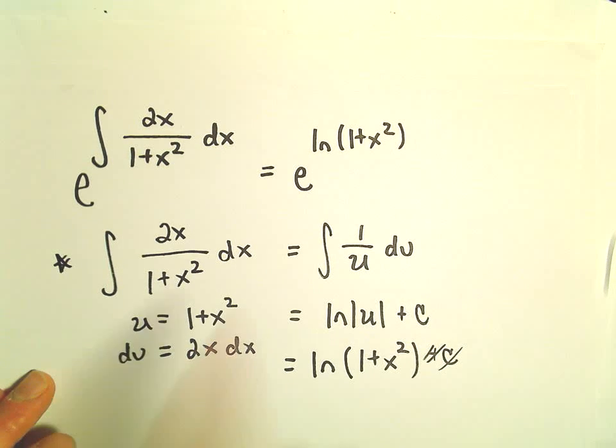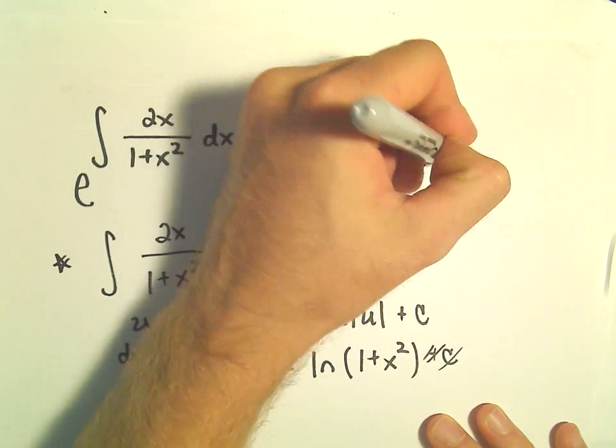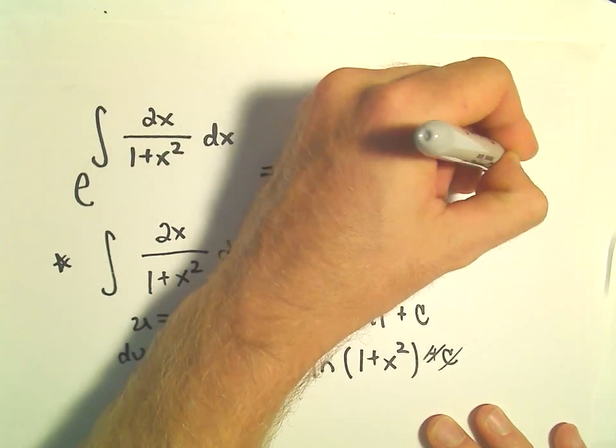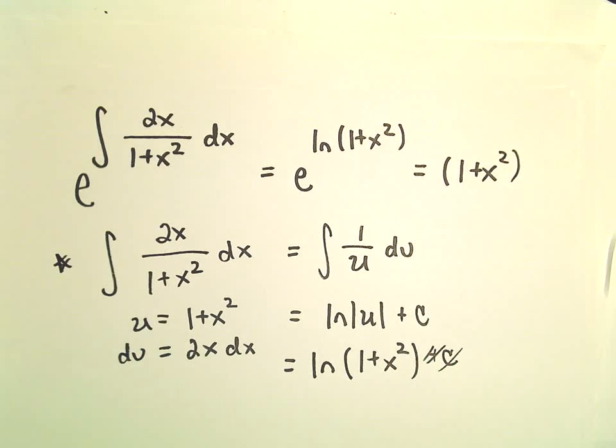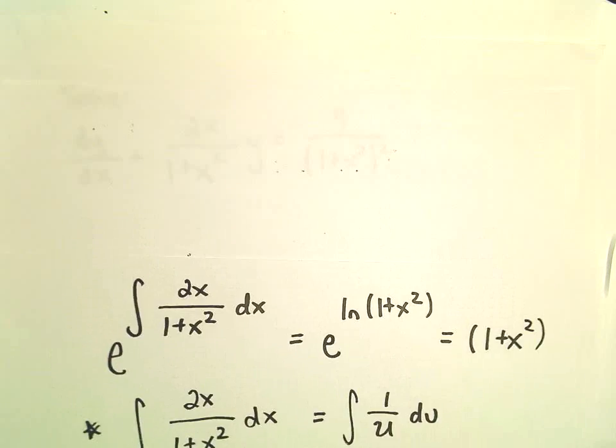Alright, so let's see. We've got e to the natural logarithm of 1 plus x squared. Well, that's just going to leave us with 1 plus x squared. So that'll be our integrating factor.